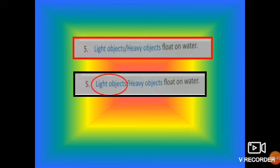Next number. Number 5. Light objects or heavy objects float on water. In light objects, the molecules are far from each other. That means they are not close to each other. Hence, they are less dense. So, they float on the surface of water. So, the correct answer is light objects float on water. Circle light objects.